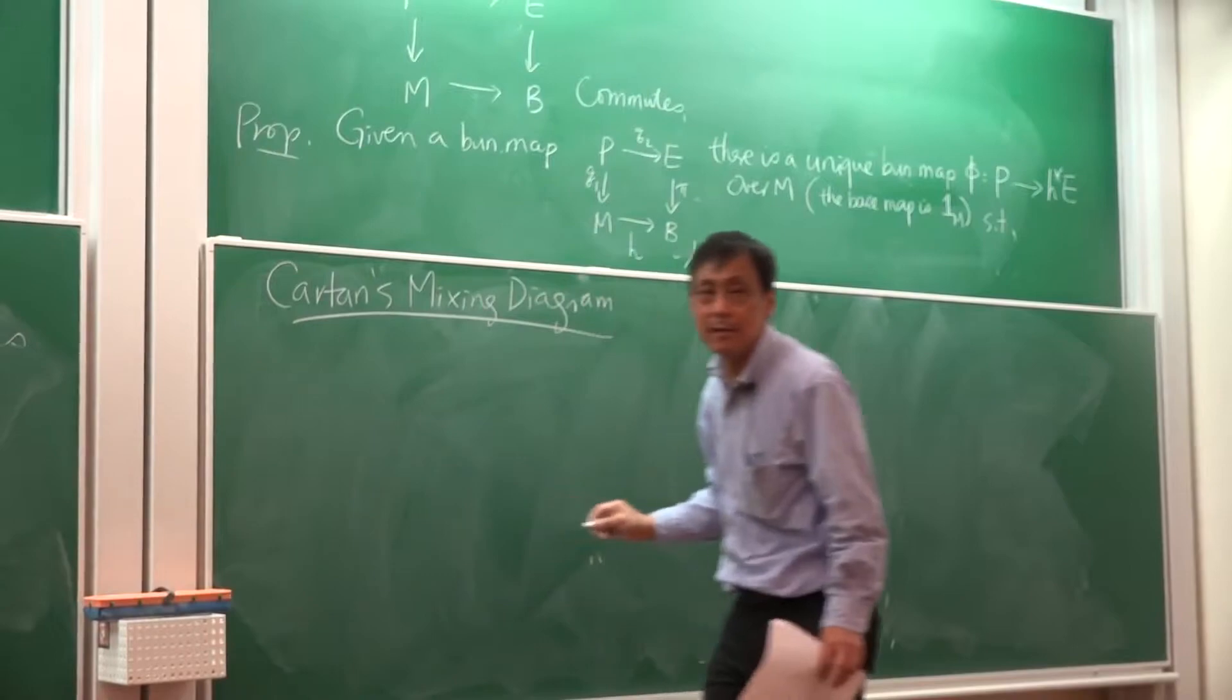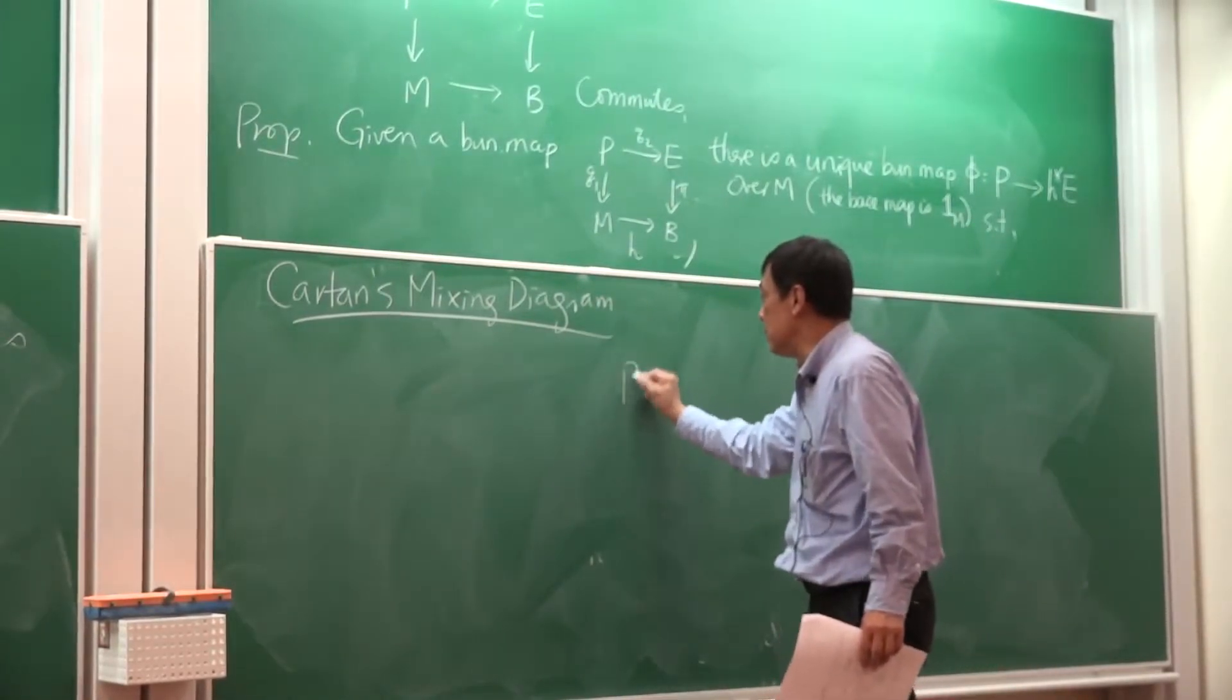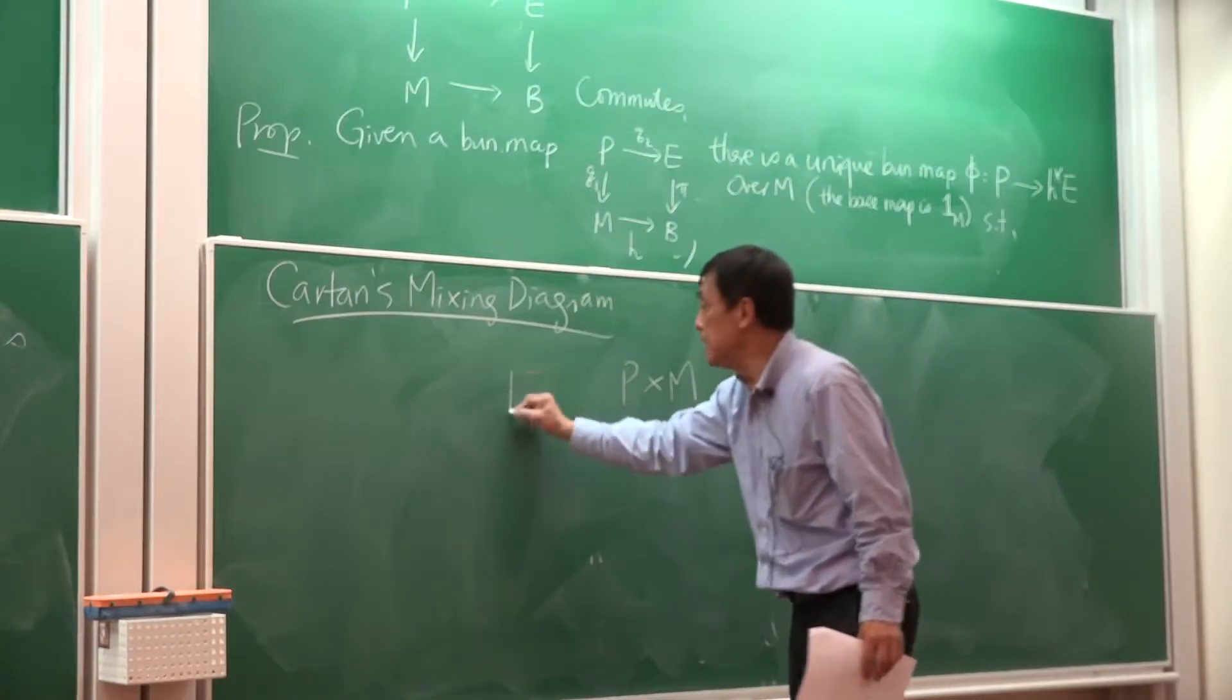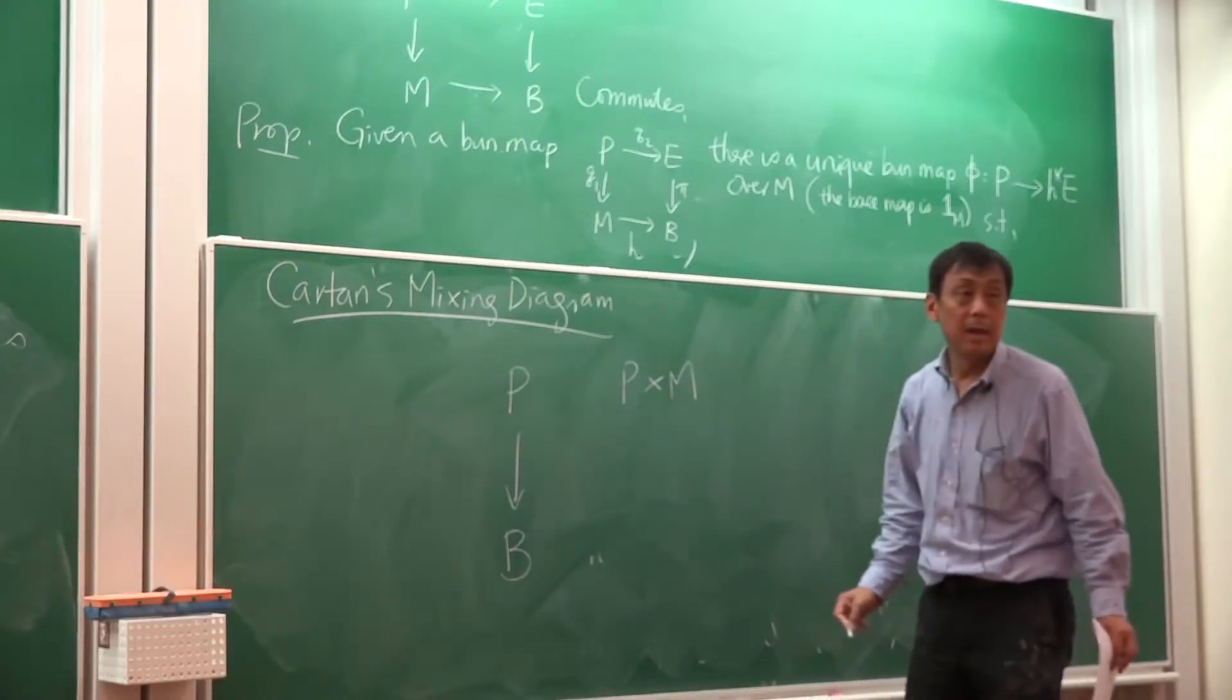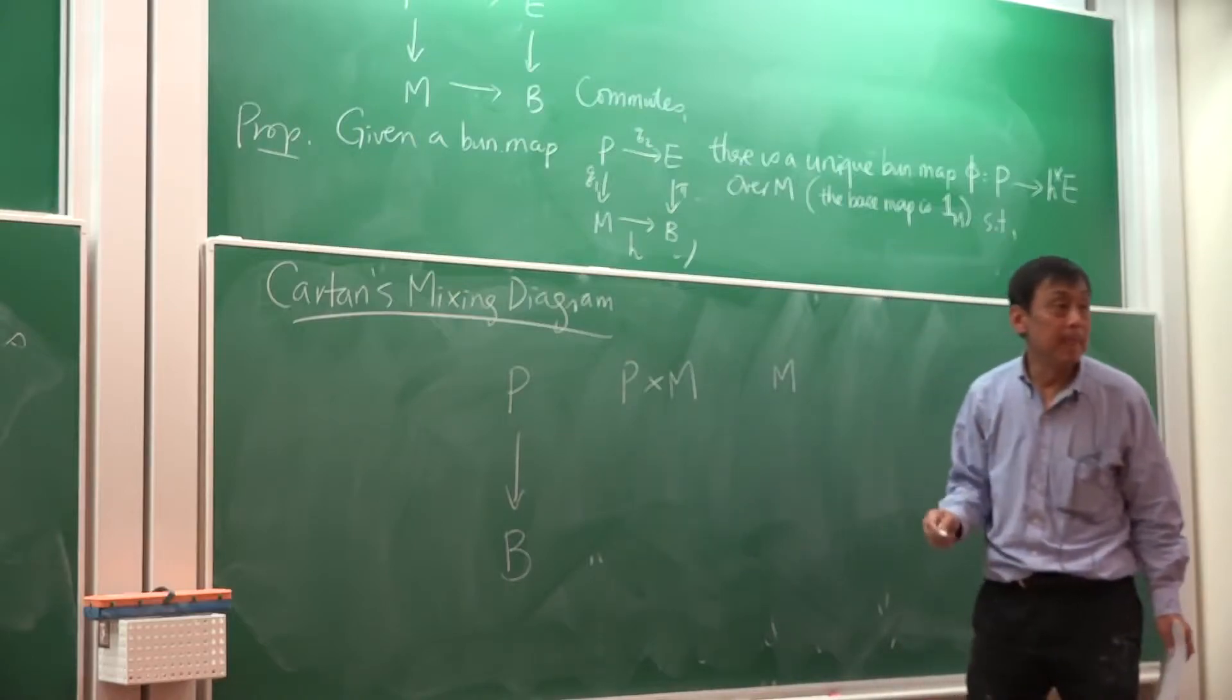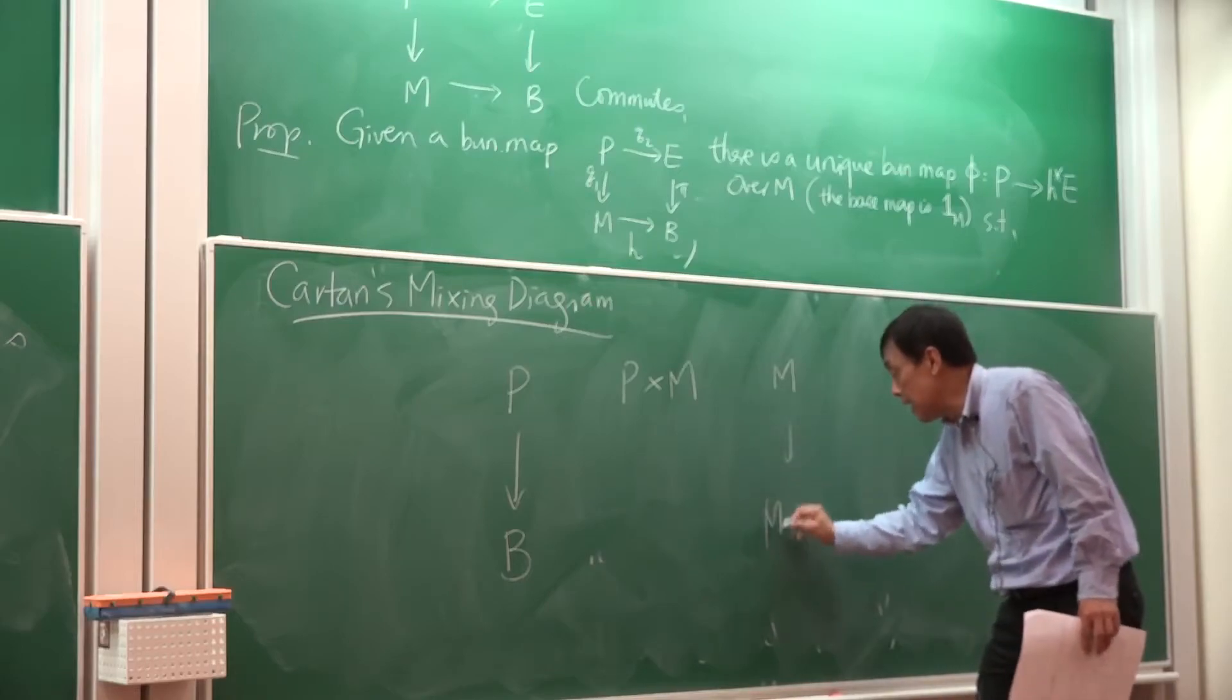Okay, so you have that principal bundle, P over B, right? And then you have this left G space, M, and you can take the quotient, M over G.